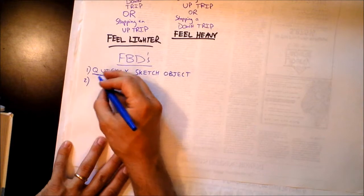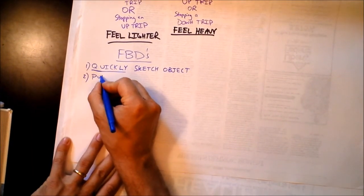Step two is actually the simplest step. In step two you're putting a dot in the center.